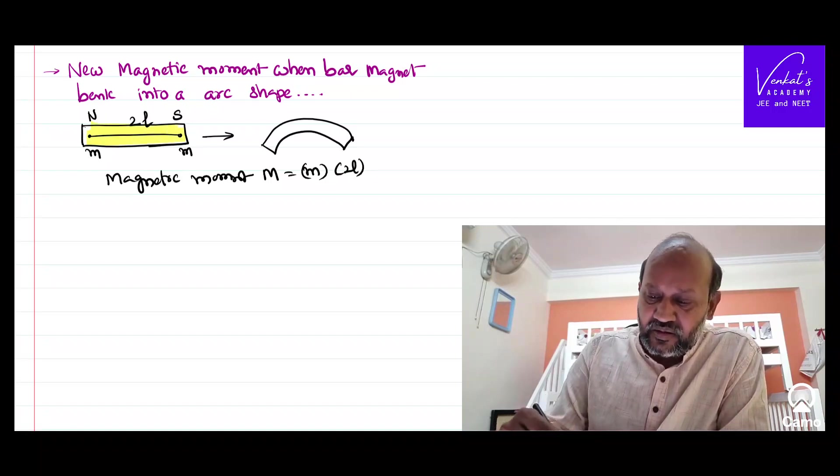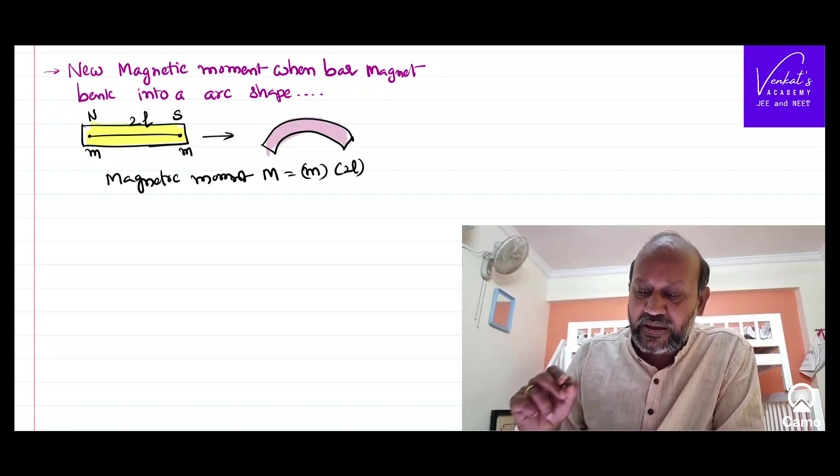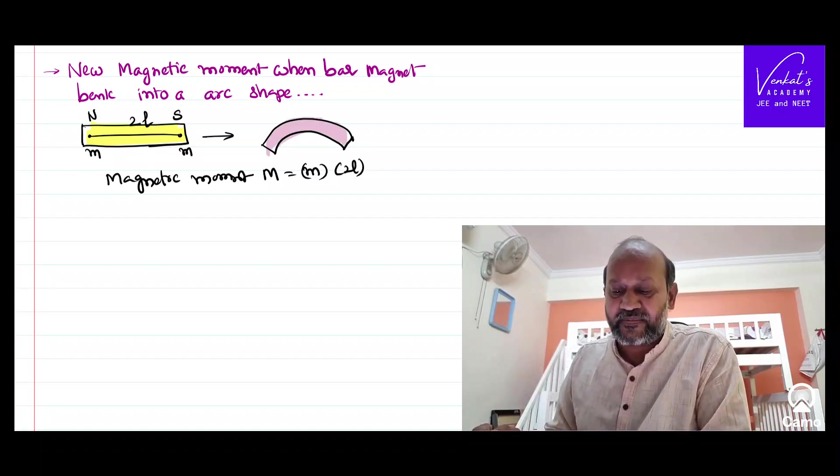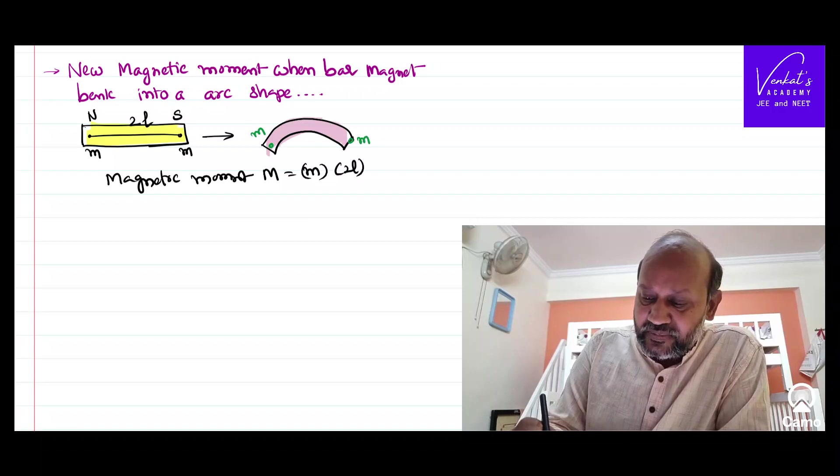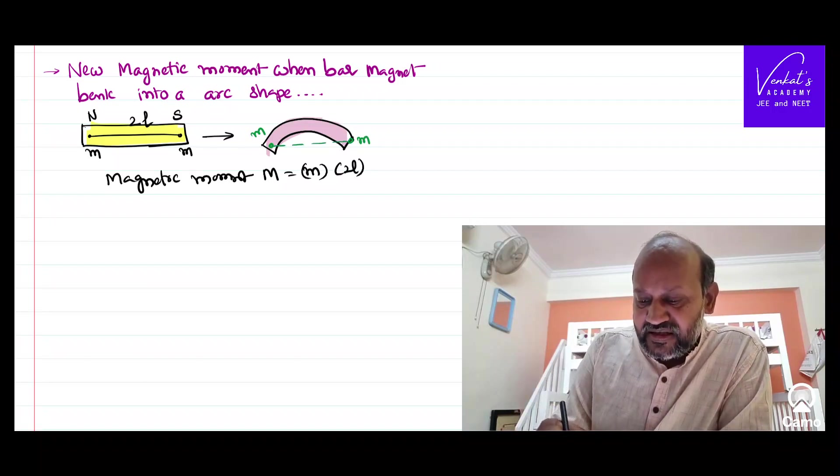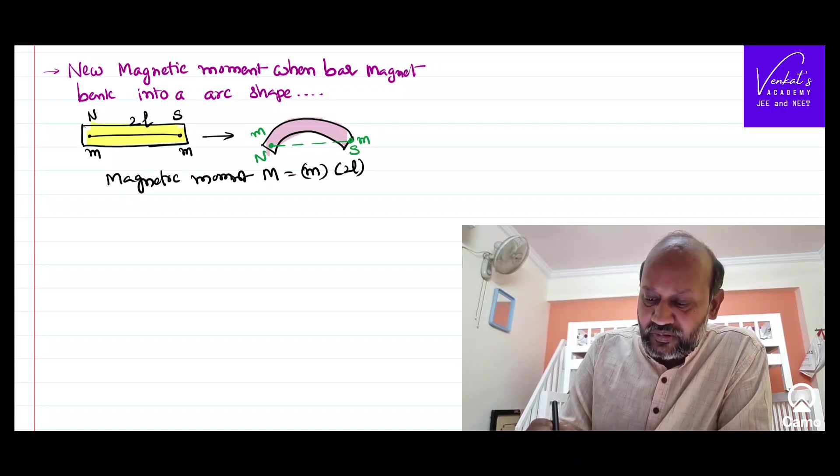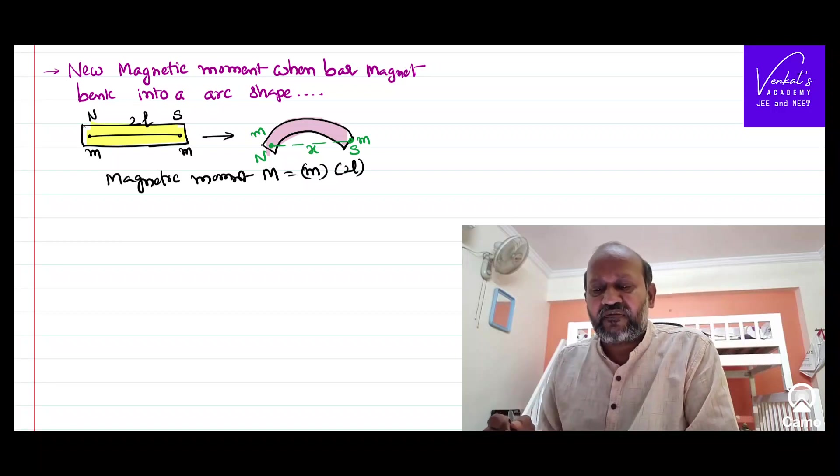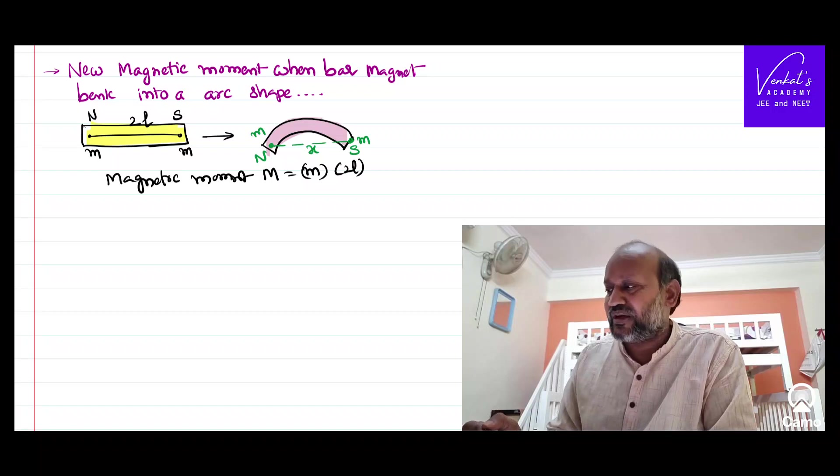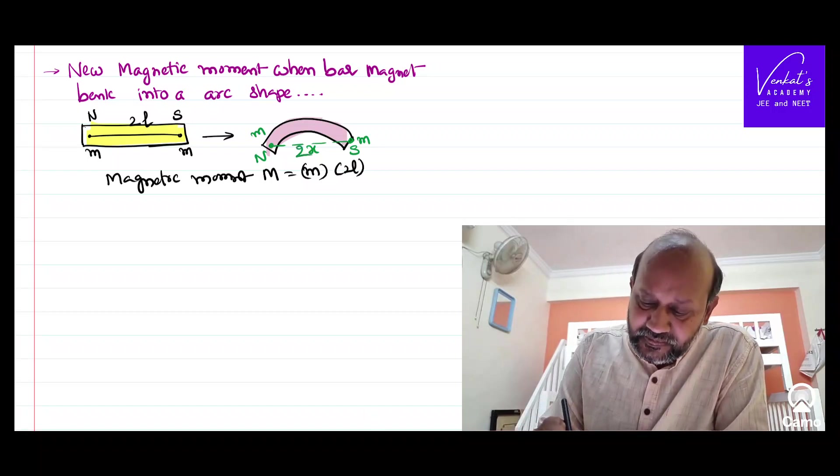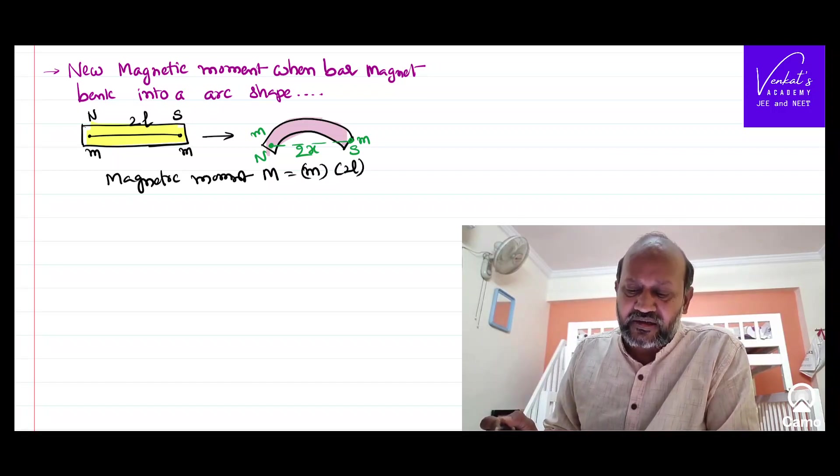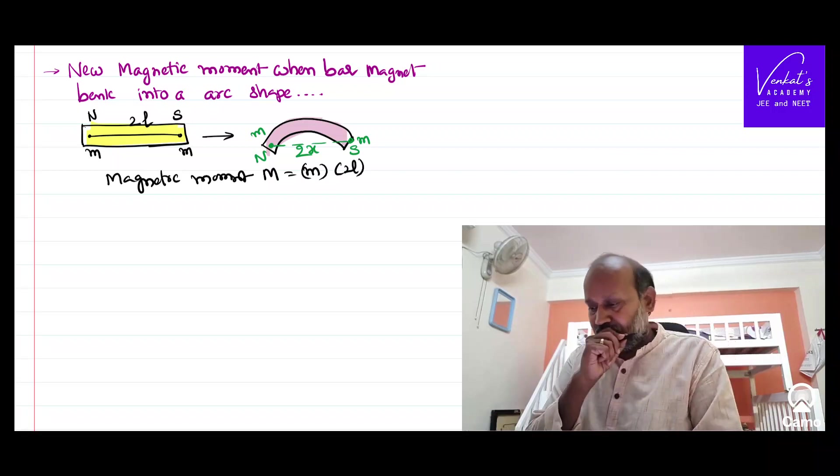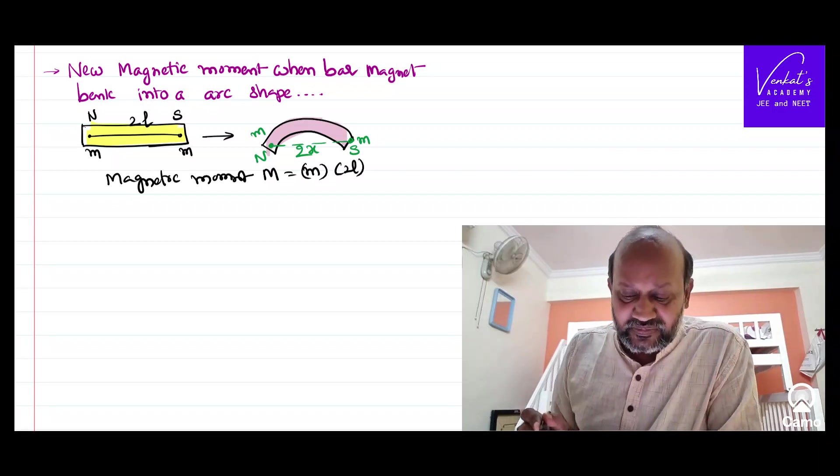If that is the case, what happens to the bar magnet when it is bent like this is the question that we need to answer. One thing that we can understand clearly is even when you bent it, its pole strength remains the same. But the distance between the poles, that is north pole and south pole, is no more 2L. If I once know that x or 2x, then I'll be knowing the magnetic moment. So my problem is now to find 2x or x.